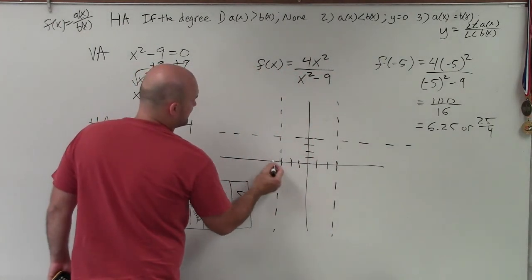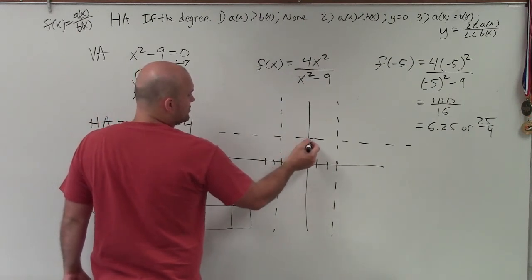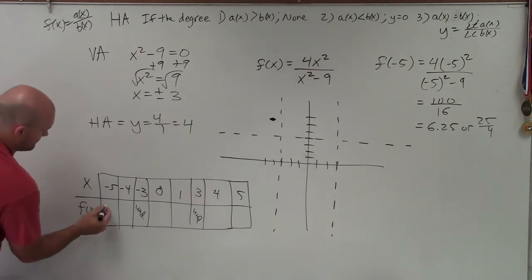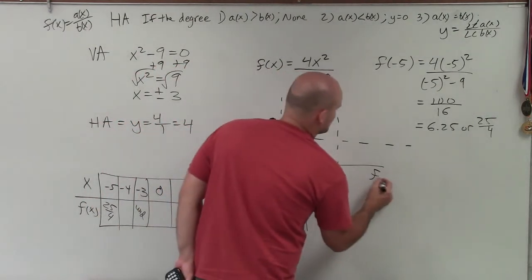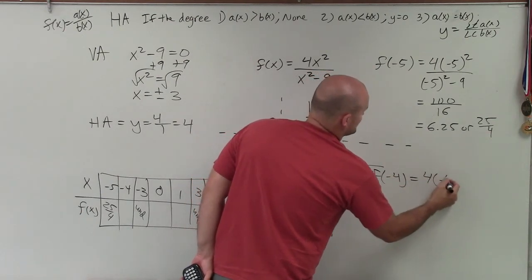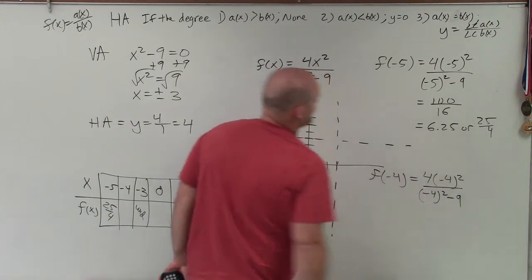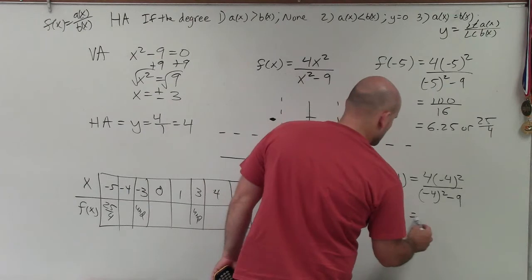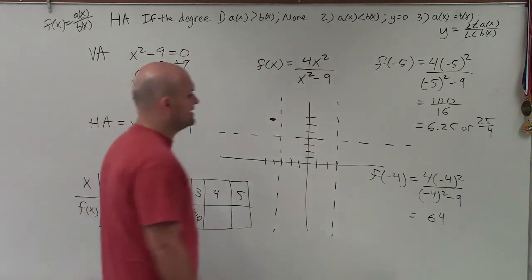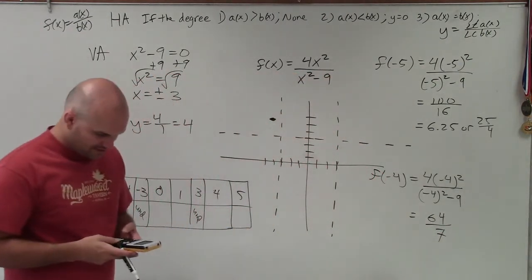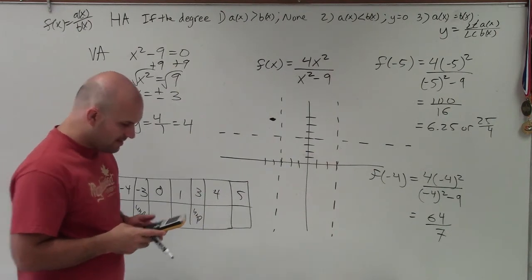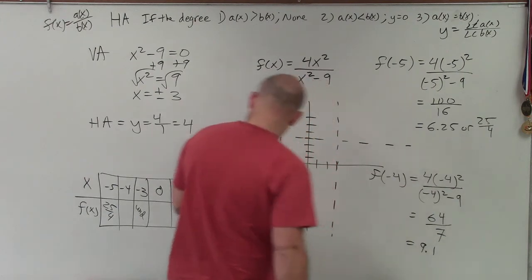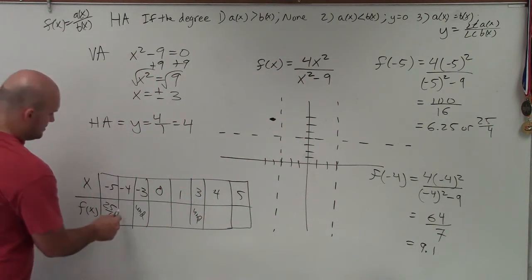So at negative 5, 1, 2, 3, 4, 5, I can go up to 6.4 or 6.25. So 4, 5, 6, 7. So I could say it's somewhere right around there. Then let's do negative 4. And I'll just do these first two, and then I'll do the rest in my head. So negative 4 is 4 times negative 4 squared divided by negative 4 squared minus 9. So negative 4 squared is 16. 16 times 4 is going to be 64. Then I have 16 minus 9 is 7. So again, we're going to have to get the division on this. 9.14. And that is the reduced fraction.